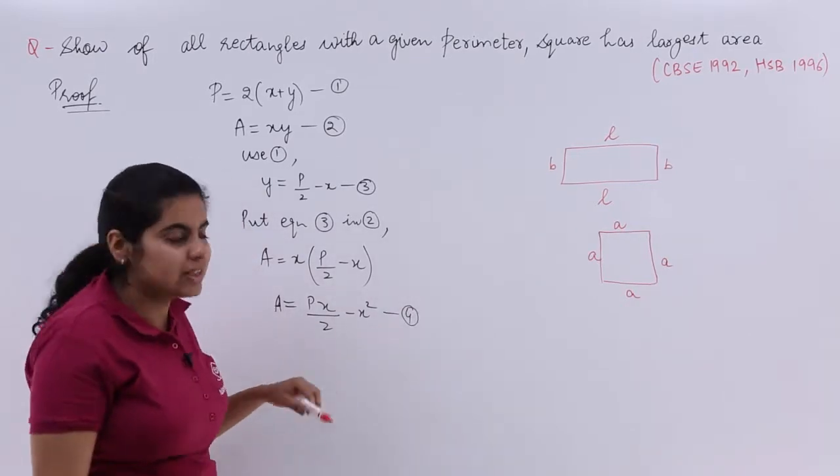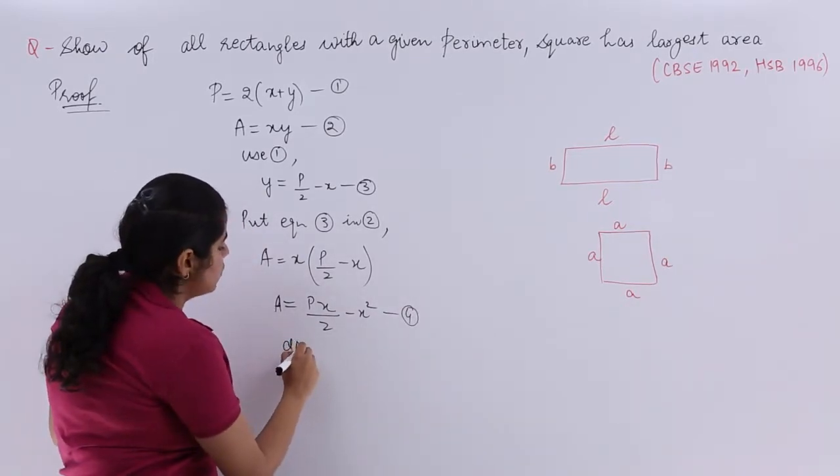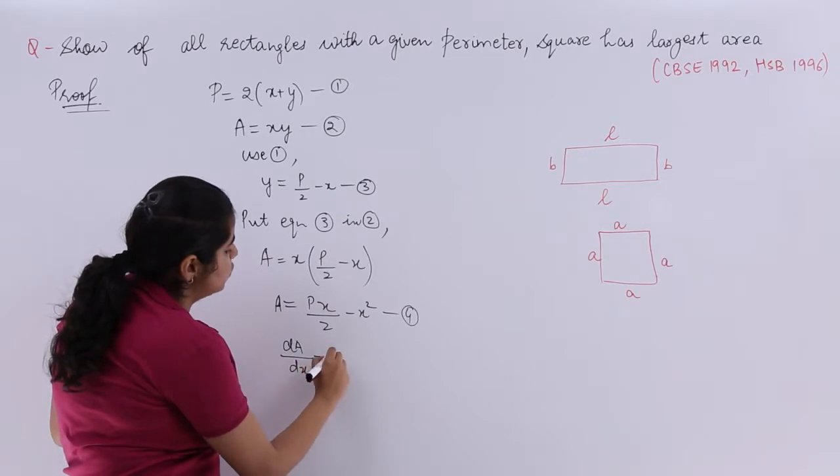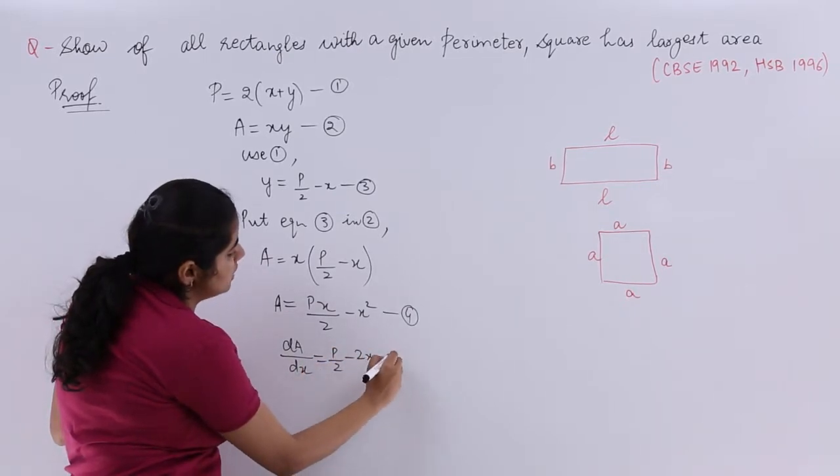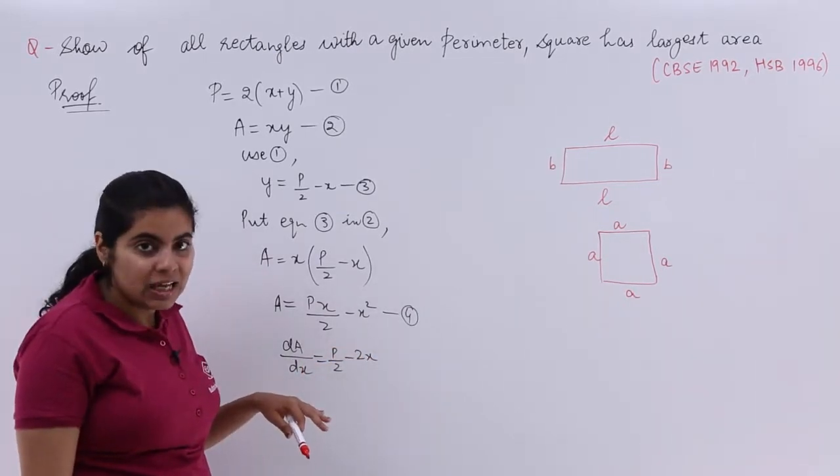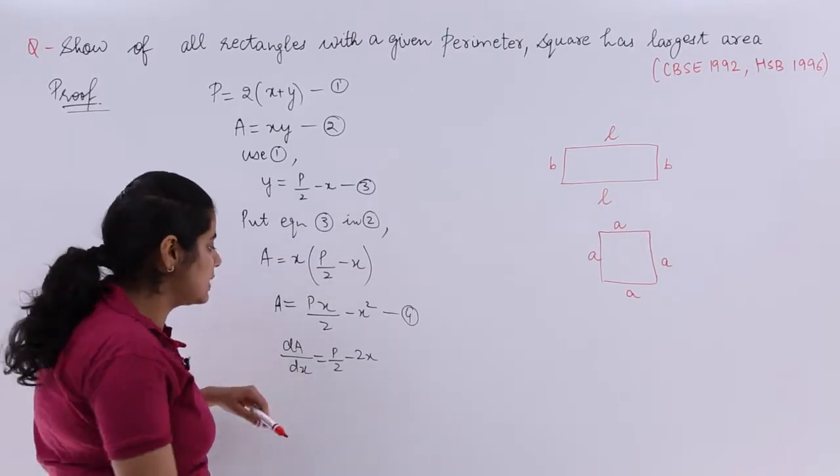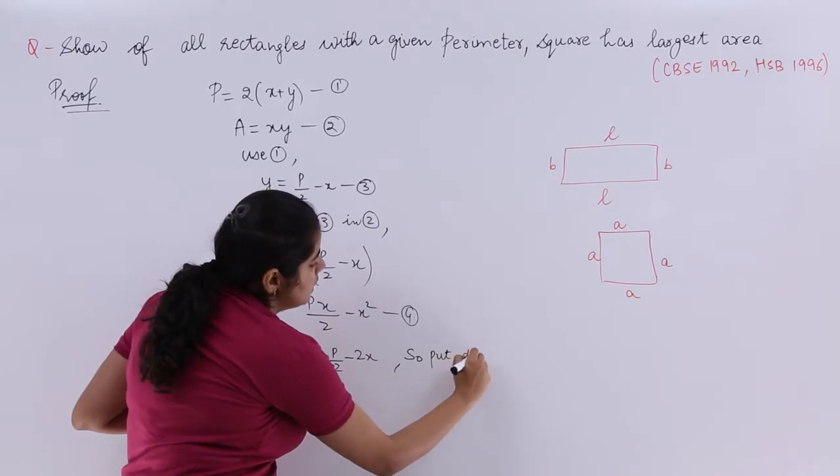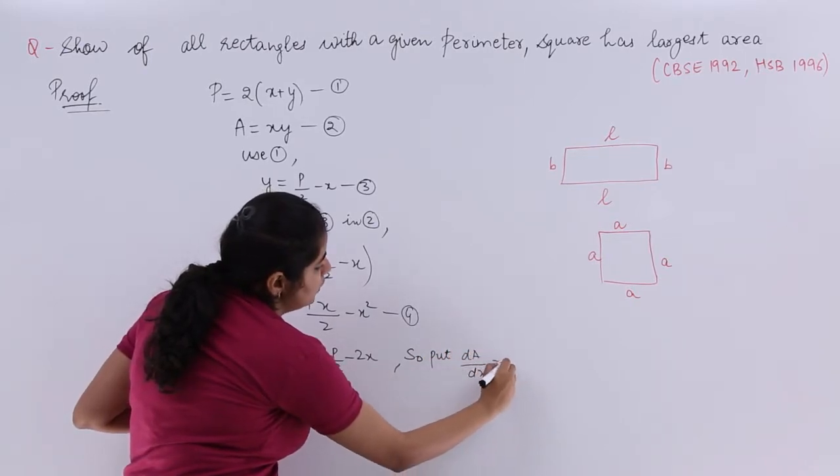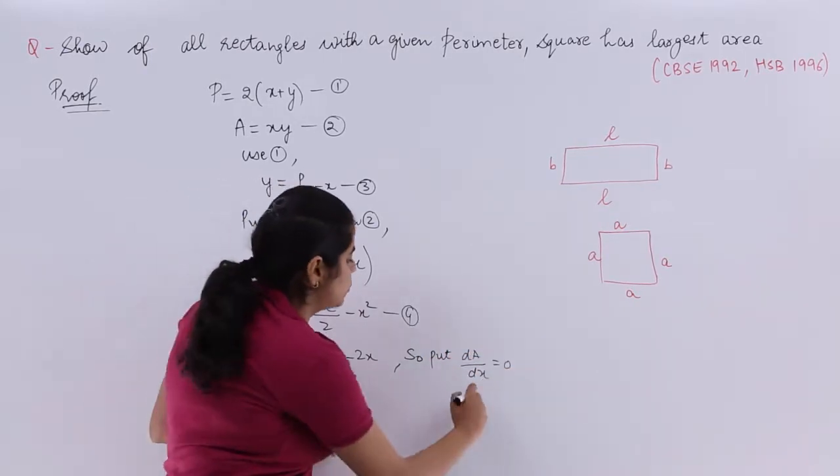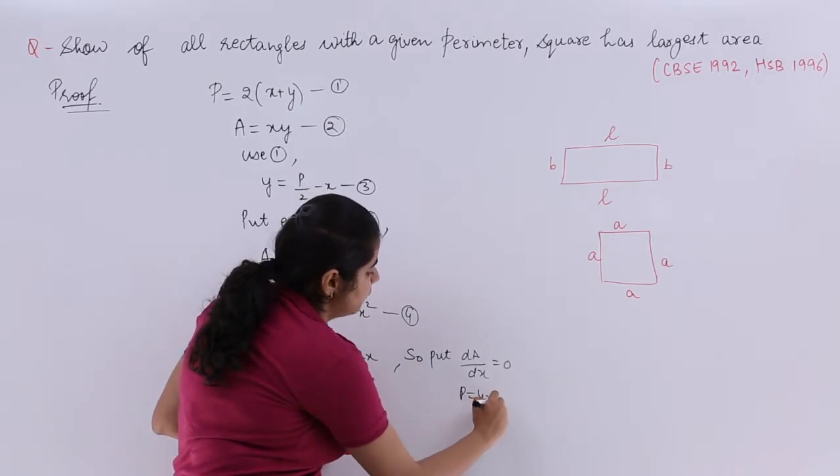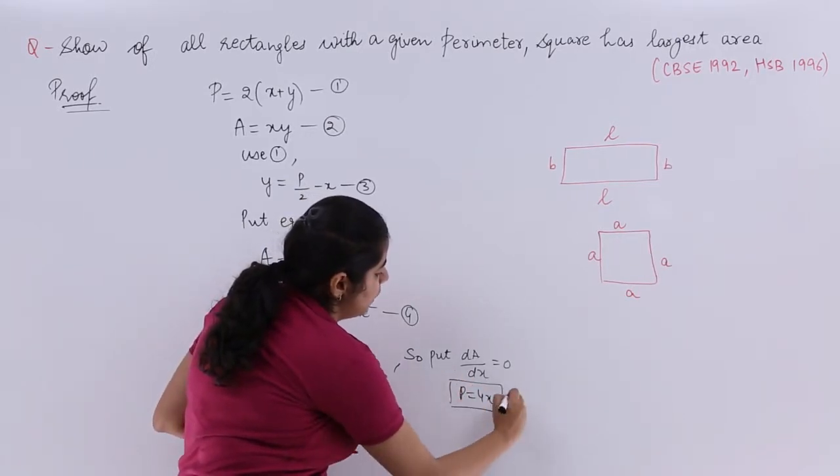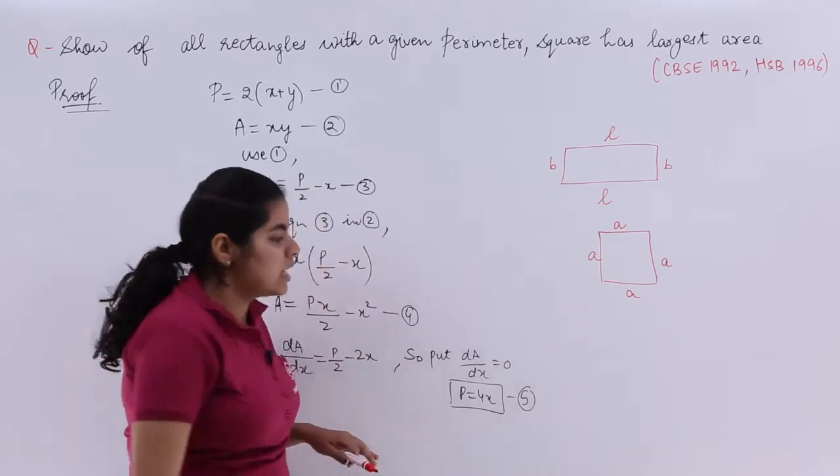Now, differentiation can be done. Let me differentiate. DA by DX equals P by 2 minus 2X. And we can find out a stationary point by putting this equal to 0. Put DA by DX equals 0, so you get P equals 4X. Equation number 5.